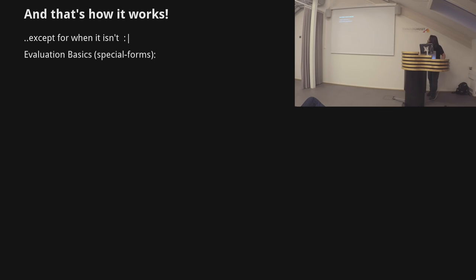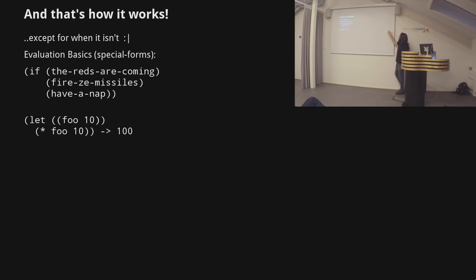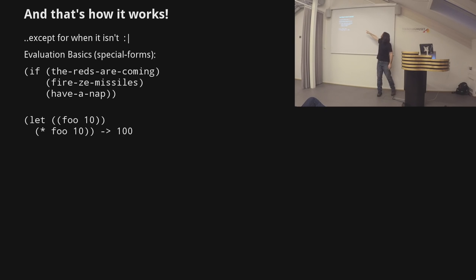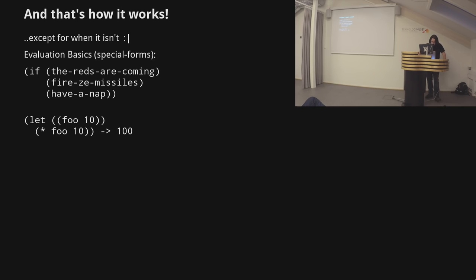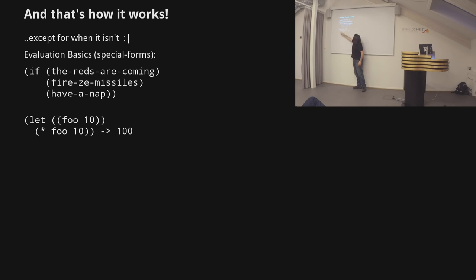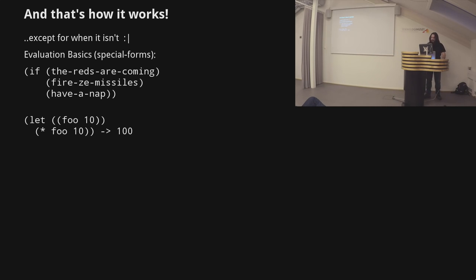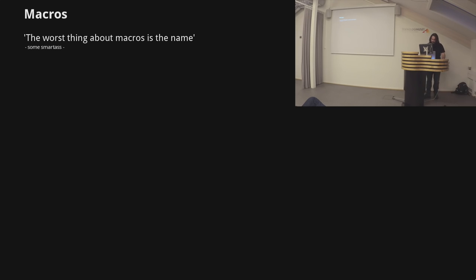That's the evaluation model — except when it isn't, because we have a few special cases. If IF were a normal function, we'd evaluate all arguments first — check if the Russians are coming, fire the missiles, go to sleep — and only then call the function. A bit late to stop the missiles. The next special case is binding variables with let: you bind foo to 10 and then evaluate the body inside the let, so foo is 10 and you multiply to get 100.